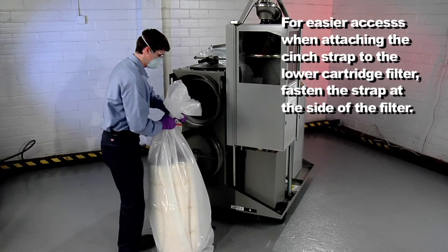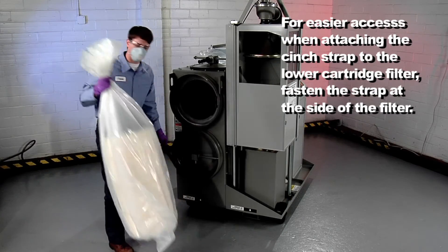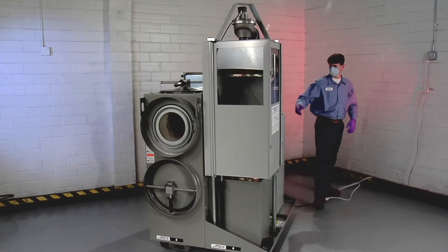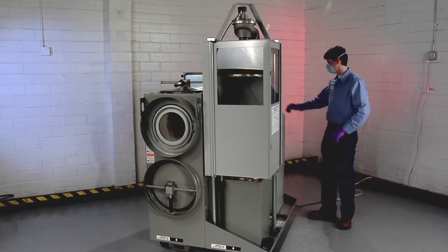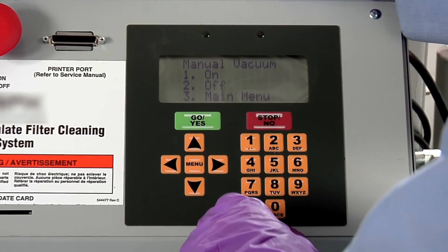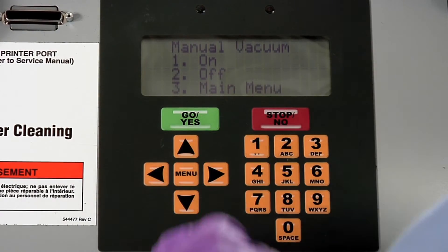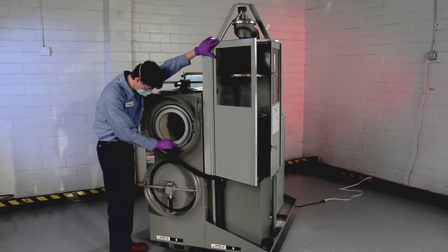Repeat steps 1 through 5 for the lower cartridge filter. Reconnect the power and turn on the DPF cleaner. Select vacuum from the main menu. Vacuum out the cartridge door area and inside the cabinet.